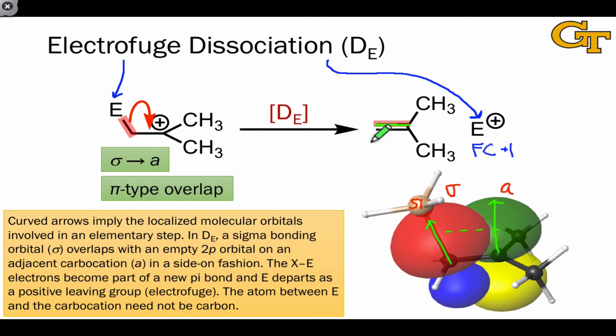There is one exception to this rule that pi type overlap leads to the formation of a pi bond. Strictly speaking, the definition of pi type overlap is that it involves the side by side overlap of orbitals like this rather than a head-on arrangement as we've seen in the sigma type overlap case.